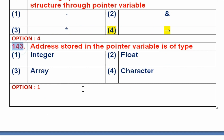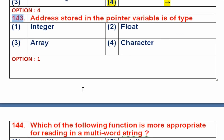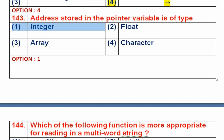Question number 143: The address stored in a pointer variable is of type — option 1 is integer, option 2 is float, option 3 is array, option 4 is character. A pointer is a special variable which stores the address of another variable. Address values are always integer values, so the data type of the address stored in a pointer variable is always integer type. Option number 1 is the right answer.